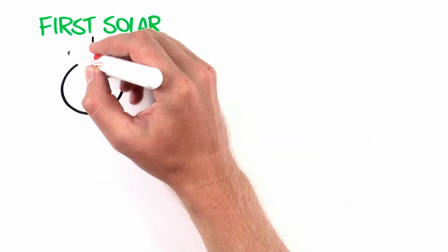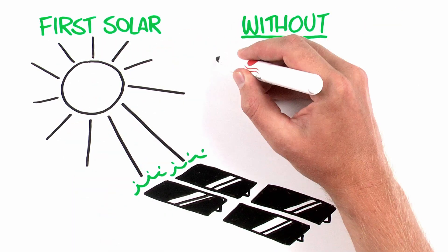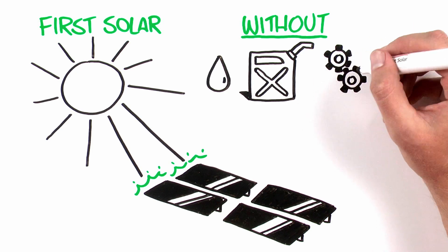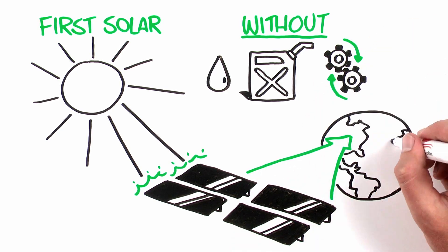First Solar is harnessing the power of the sun and converting it into electricity. Without water, fuel, or other moving parts, our company is delivering sustainable solar energy solutions worldwide.